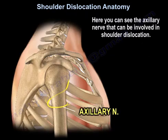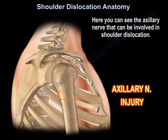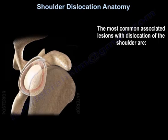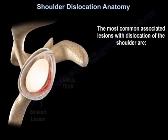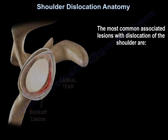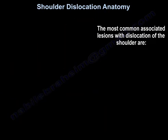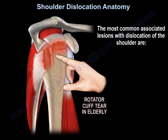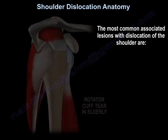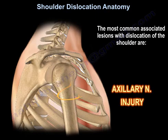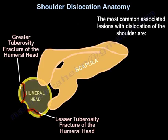Here you can see the axillary nerve that can be involved in shoulder dislocation. The most common associated lesions with dislocation of the shoulder are Bankart lesion, Hill-Sachs lesion, cuff tear in the elderly, axillary nerve injury, and greater tuberosity or lesser tuberosity fractures.